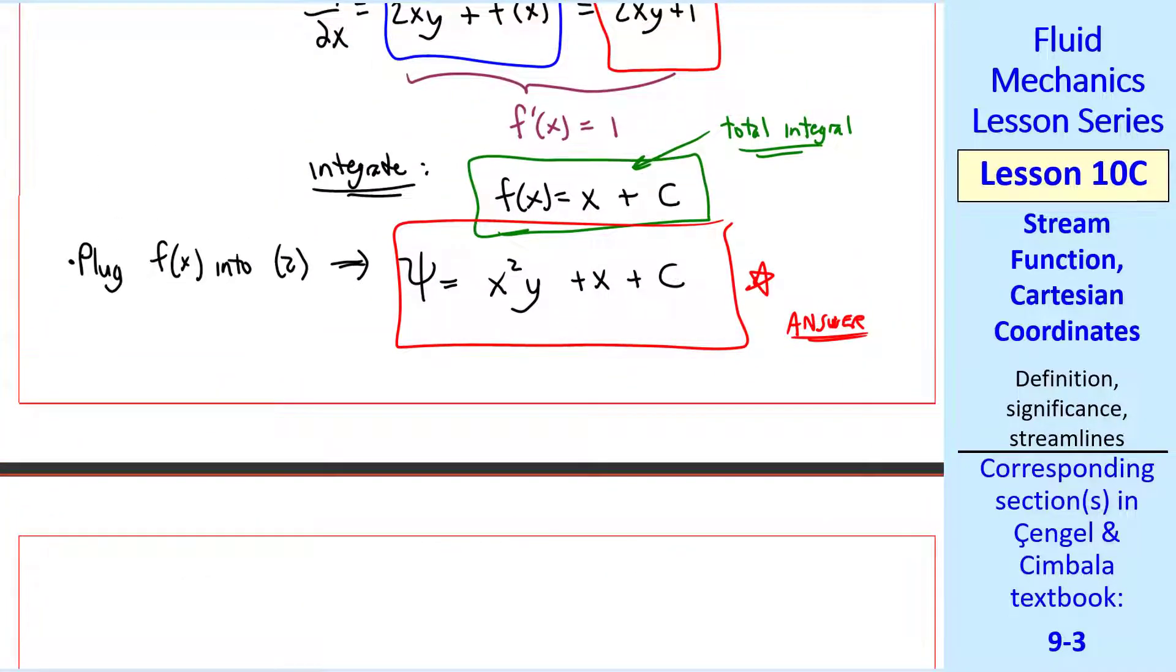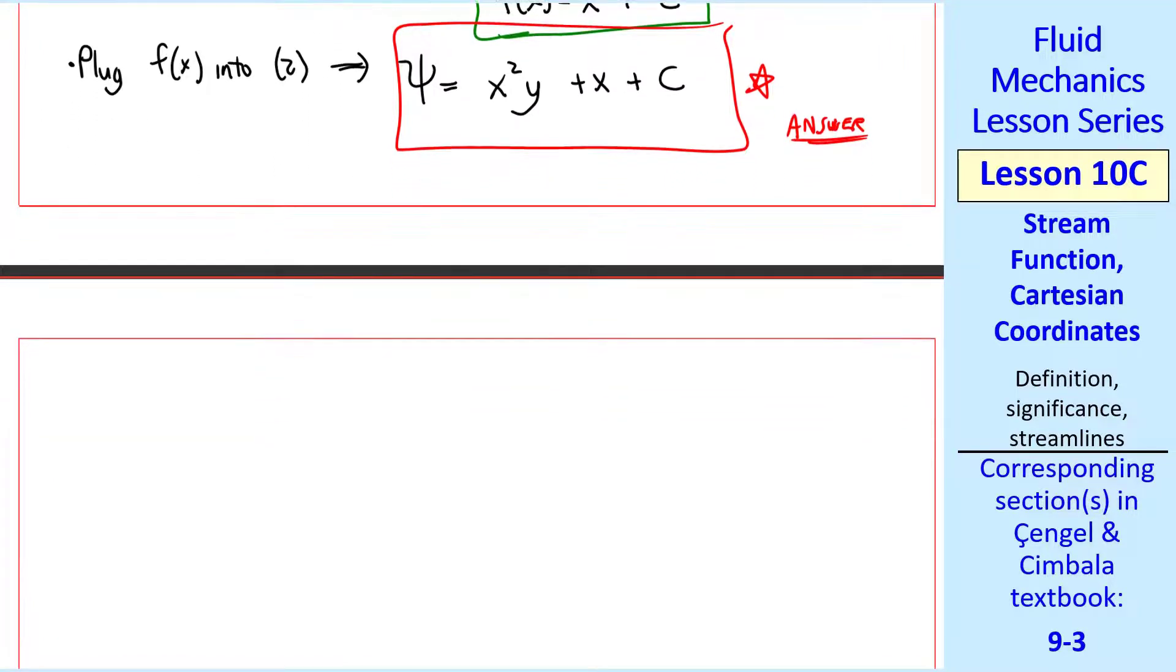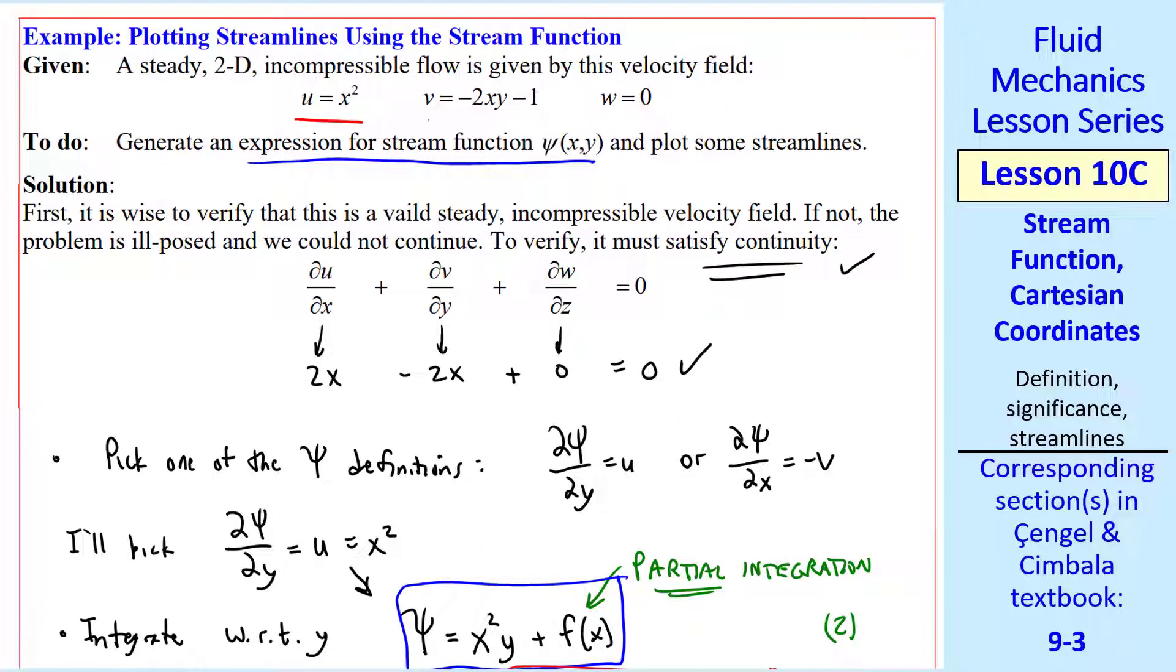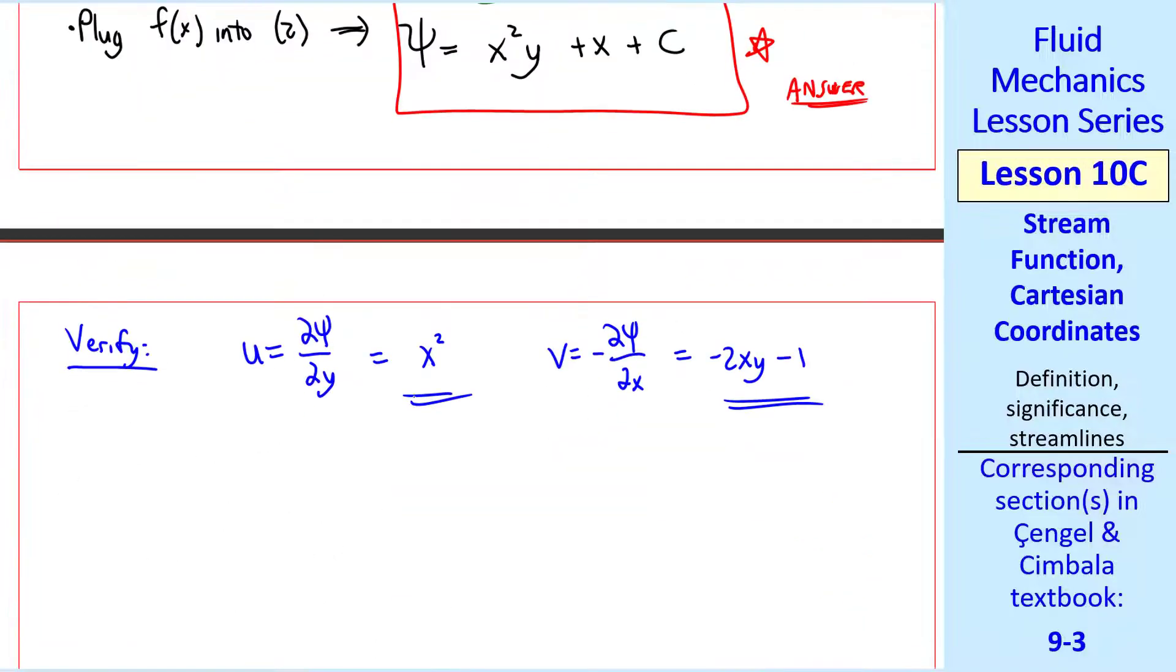The second part of the question asks us to plot streamlines but first it's always a good idea to verify to make sure you didn't make algebra mistakes. Since u is del psi del y I plug in my psi and I get x squared from here and v is negative del psi del x which gives me negative 2xy minus 1 and let's scroll up to the given information where we had u equal x squared and v equal minus 2xy minus 1 which indeed agrees with what we got here. So this is verified.